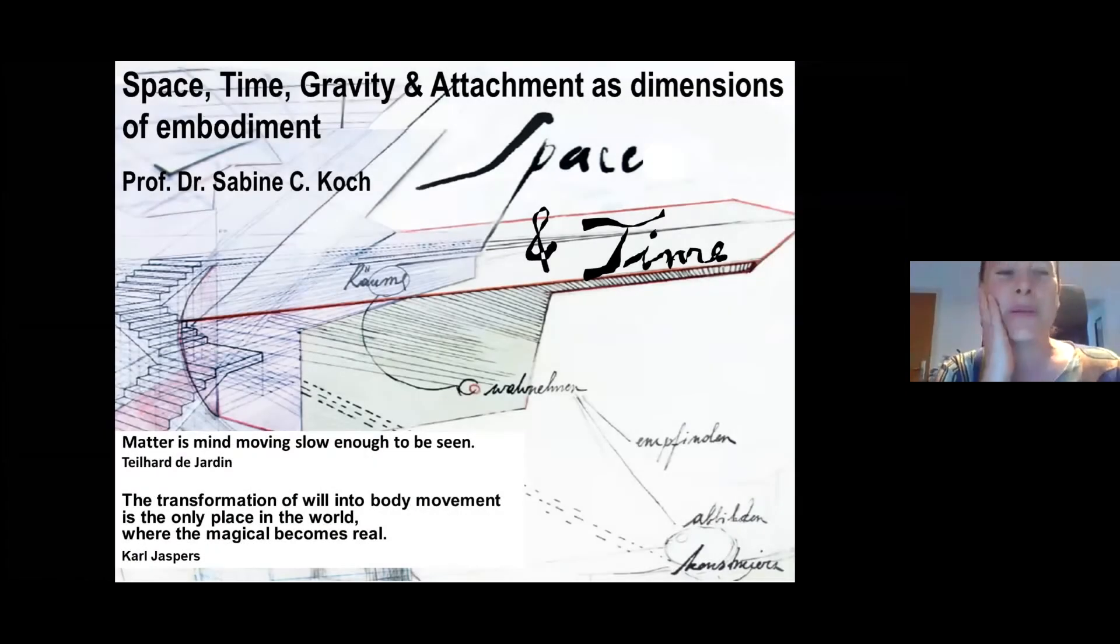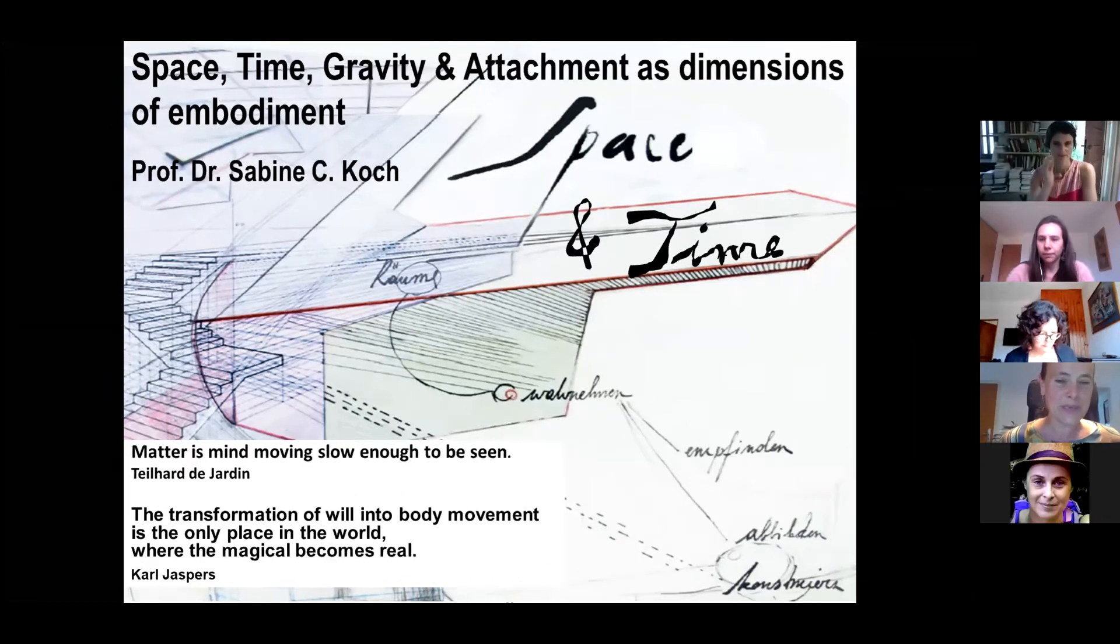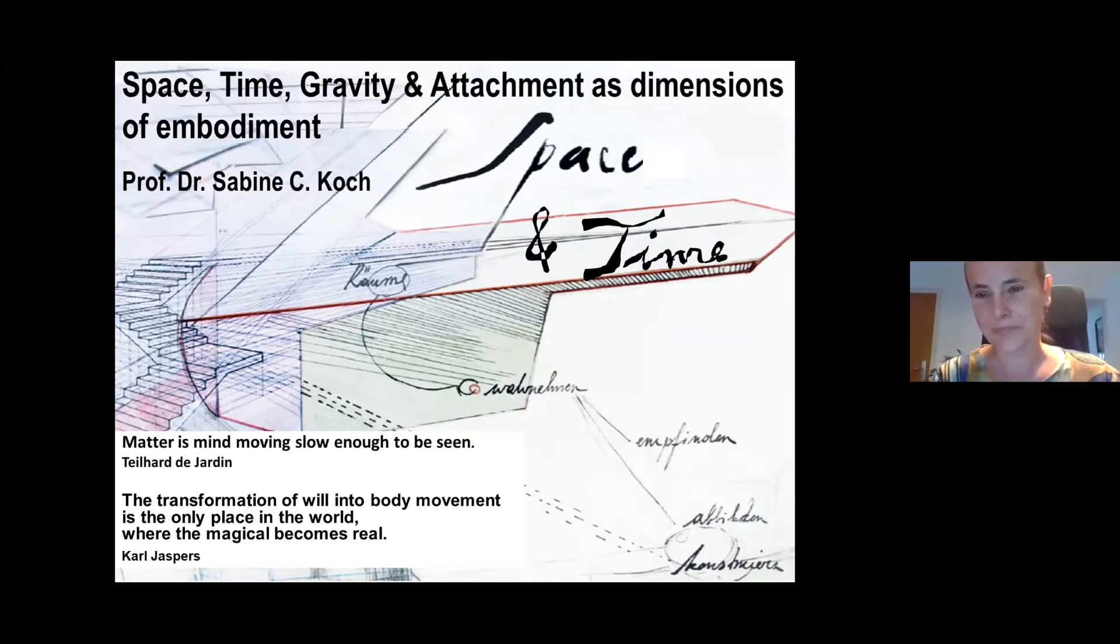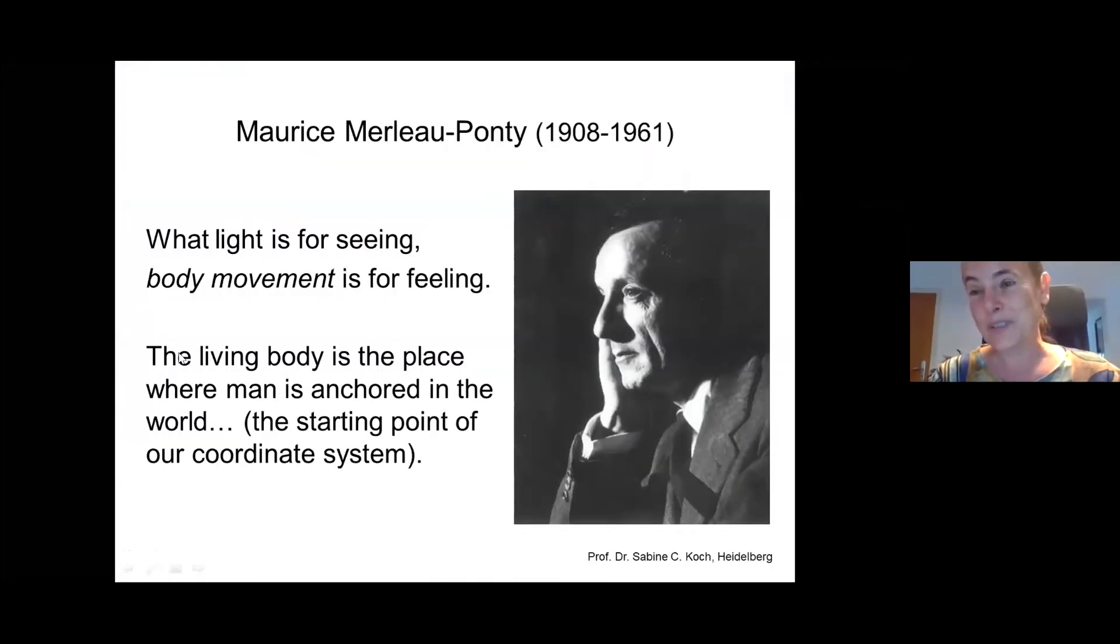My presentation will be about embodiment and the dimensions of space-time, gravity, and attachment. I've put up front these two proverbs. The second one is of Carl Jaspers: the transformation of will into bodily movement is the only place in the world where the magical becomes real. Let's start with Merleau-Ponty—it's always good to start with him. He was saying that what light is for seeing, body movement is for feeling. So he gave body movement a very special place. He also said that the living body is the place where man is anchored in the world and thus it's the starting point of our coordinate system.